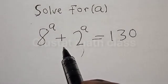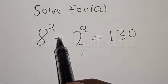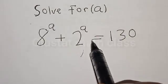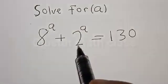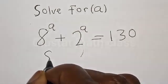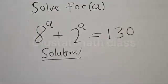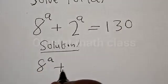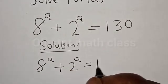Hi everyone, welcome to my class. In today's class we want to find the value of a from this given exponential equation: 8 raised to power a plus 2 raised to power a is equal to 130. Before we proceed, please don't forget to like, share, comment and subscribe. Solution — we have the given equation 8 raised to power a plus 2 raised to power a is equal to 130.